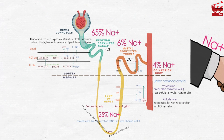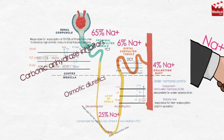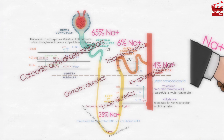In the next lecture we'll discuss carbonic anhydrase inhibitors, osmotic diuretics, loop diuretics, thiazide diuretics, and potassium-sparing diuretics — covering their actions, uses, and side effects.